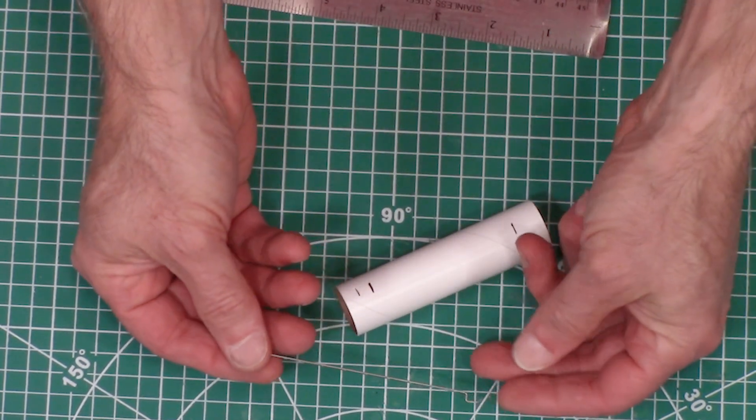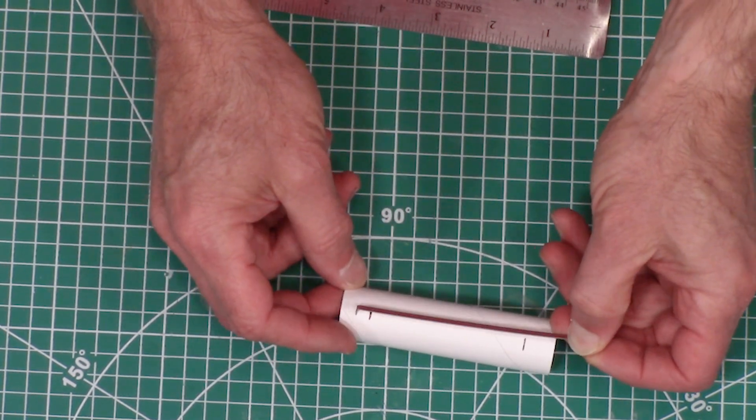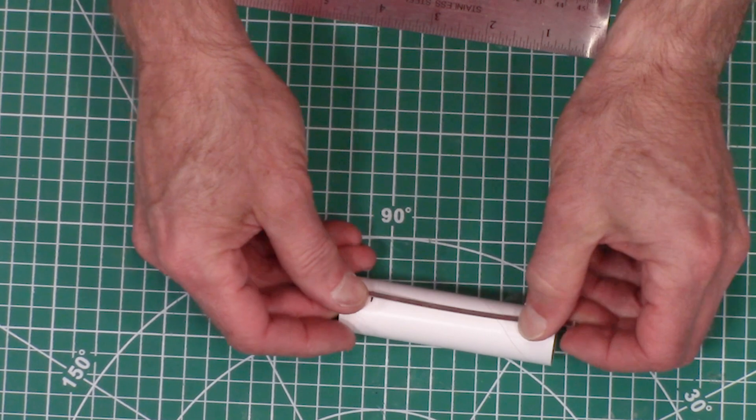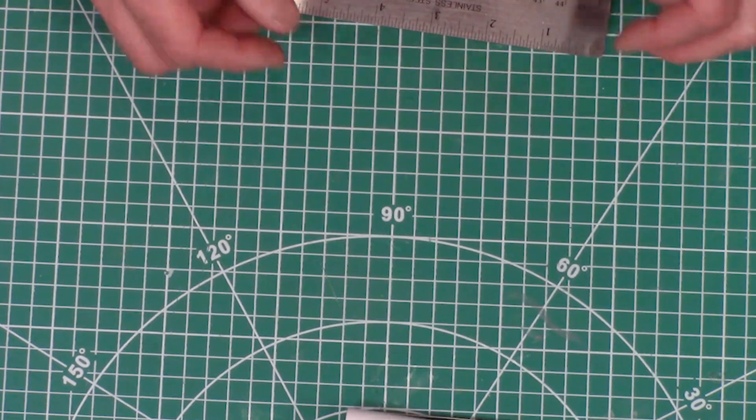This is what the engine hook is. This part here with the 90 degree bend is going to go into that slot that we just made. So that's only as long as it needs to be.